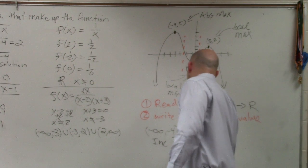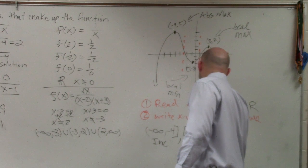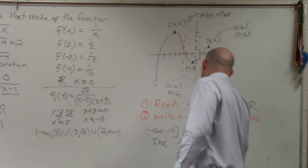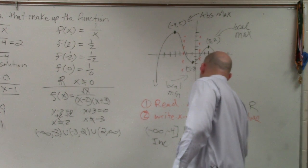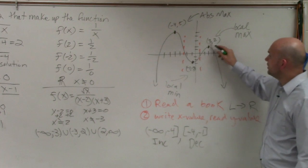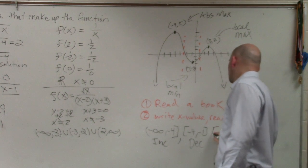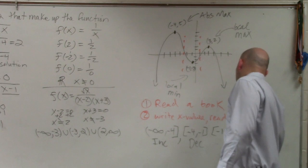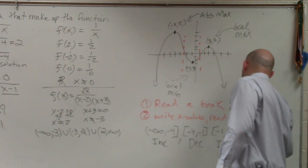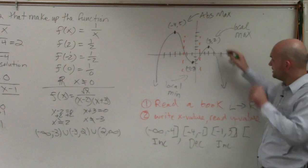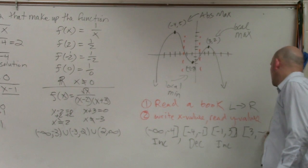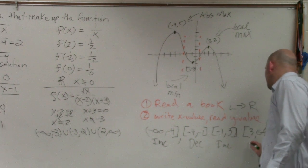the y values are doing what? Decreasing. So you'd write, from negative 1, oops, I'm sorry, from negative 4 to negative 1, the graph is decreasing. From negative 1 to positive 3, it's increasing. And from 3 to infinity, it's decreasing.